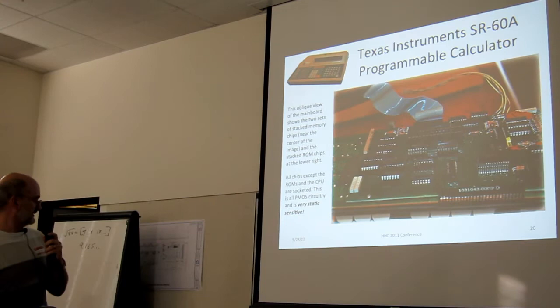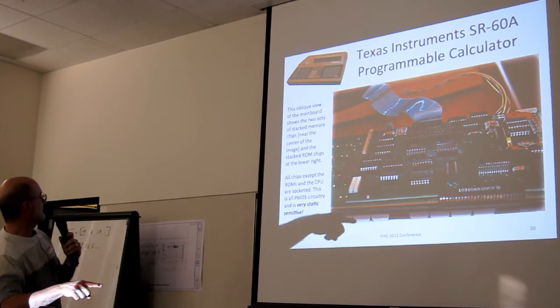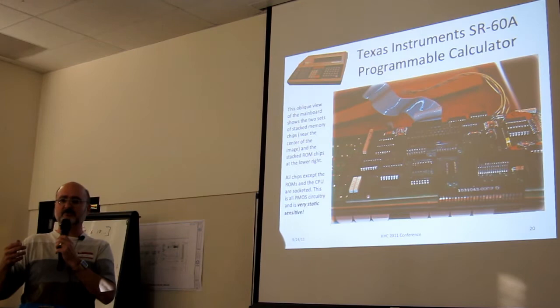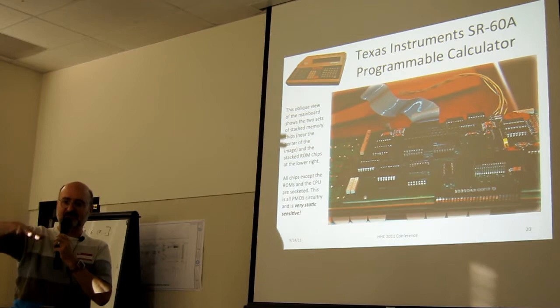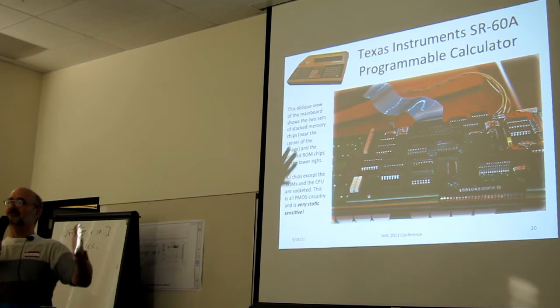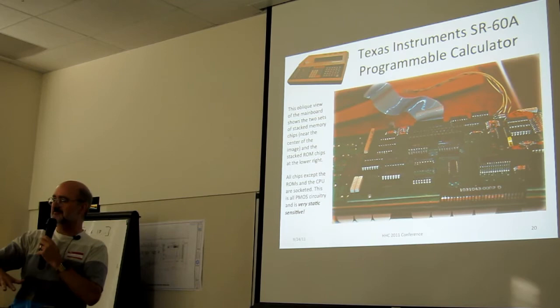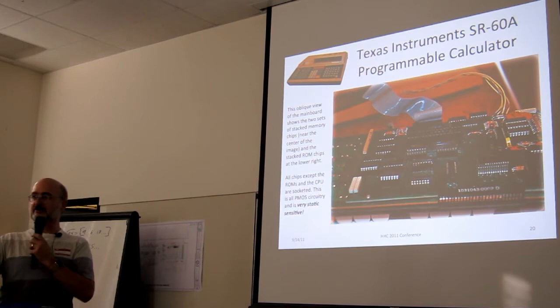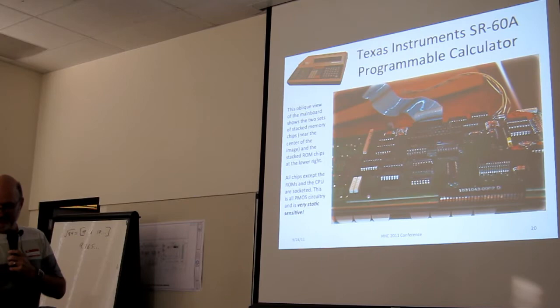You might notice a DB25 connector and a ribbon cable here. That's what TI calls the aux connector auxiliary. And some of the documentation mentions things like an electric typewriter you could hook up or a cassette drive. I've not been able to find any information either of these ever existed. Here's another shot of the motherboard. It's on the bottom of the keyboard. You can see the keys here. Every chip in there except the CPU and the ROMs is socketed. Now think about this for a moment. It's socketed and we all know that's going to be a little less reliable but maybe they wanted to make it easier to repair. But this is on the underside of the keyboard so all of these chips are hanging upside down in their sockets.